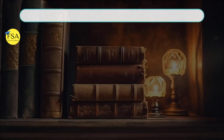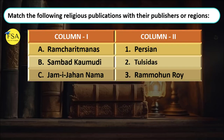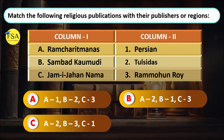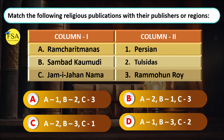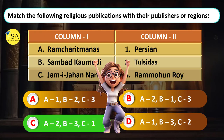Question 3: Match the following religious publications with their publishers or regions. Ram Charitmanas is associated with Tulsidas. Sambath Kaumudi should be Ram Mohan Roy. And Jami Jahan Namai should be Persian. So the answer is 2, 3, 1 — that is Option C. Of course Option C is the correct answer.